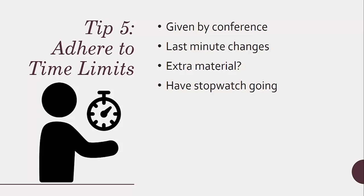Of course, last-minute changes might occur — maybe the person before you talked for 25 minutes, and you might have to speed up a little. Or maybe you talk too fast, which is usually my problem — is there anything extra you can add? You can have a stopwatch if that makes you more comfortable. I glance at my time all the time: am I going too fast, too slow? Is there anything I can add to make it a little longer, or take out to make it shorter?